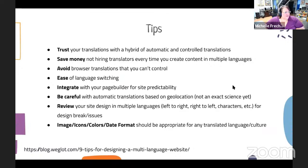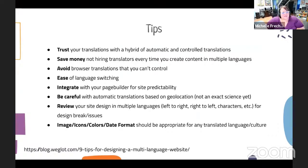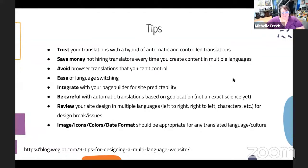Trust your translations with a hybrid of automatic machine translation and controlled human translations. You can save money by not hiring translators every time you want to translate content — if you use translation services that are automatic machine hybrids, you can just click a button and have it automatically translated without spending additional money every time you add content to your website. And again, that ease of language switching — I click a button, I flip a dropdown, I click a link, and I automatically change to a different language.